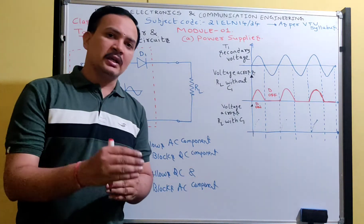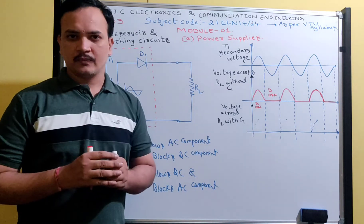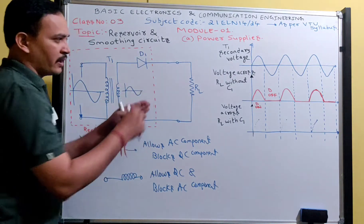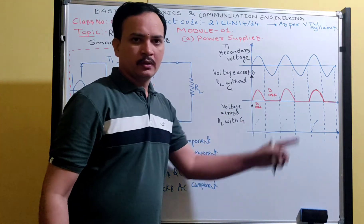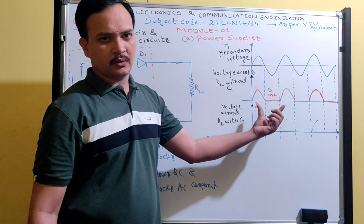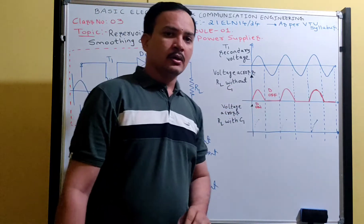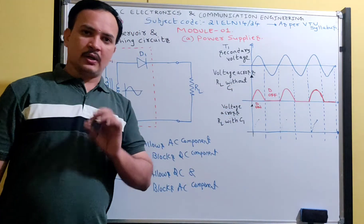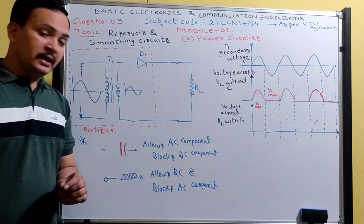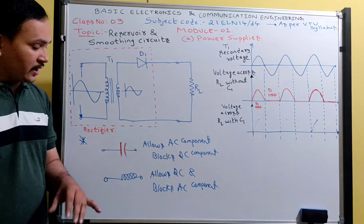For example, if I take a half-wave rectifier circuit, the output of the half-wave rectifier has a waveform where only the positive half cycle is utilized and the negative half cycle is not utilized. In order to get a continuous power supply, we need smoothing circuits. Before moving to smoothing circuits, we need to know the concepts of inductor and capacitor.